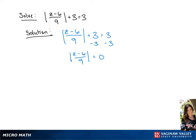Since 0 and negative 0 are the same, we're only going to have one equation. So we will have z minus 6 over 9 equals 0.